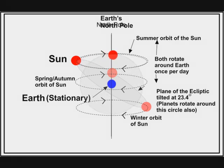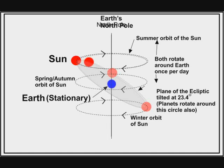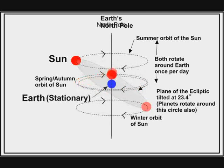Here we see the Sun going round the top of the ecliptic in one day, but at the end of each day it has moved on almost a degree further, and three months later it will be down a quarter of the way round the ecliptic, level with the equator — and that is when we would get the autumn season. A further three months and it will be at the bottom of the ecliptic.